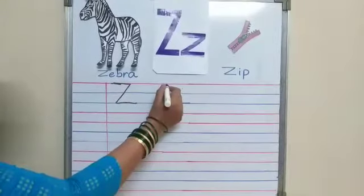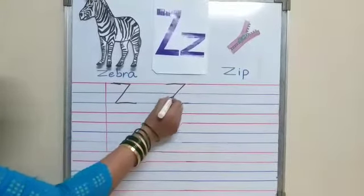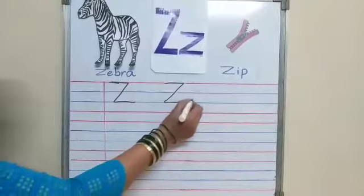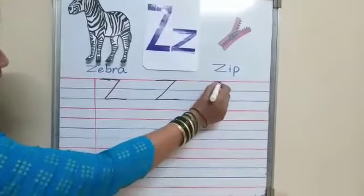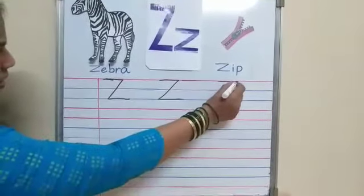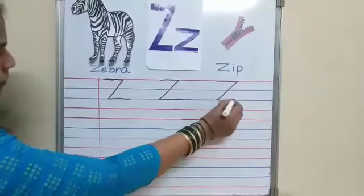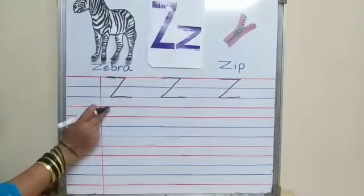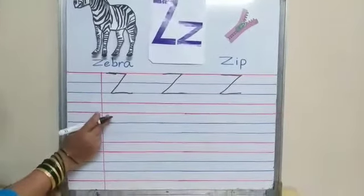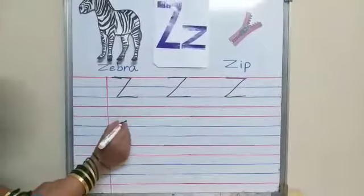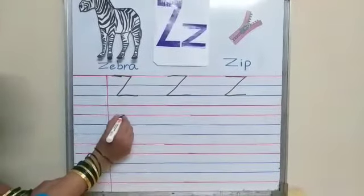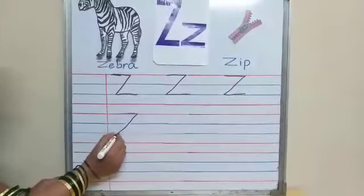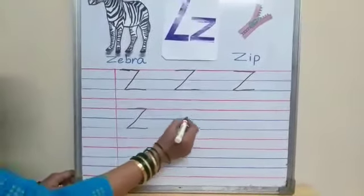Z for zebra. Danger line — you will not write on this line. Again from the first red line: sleeping line, slanting line, sleeping line.